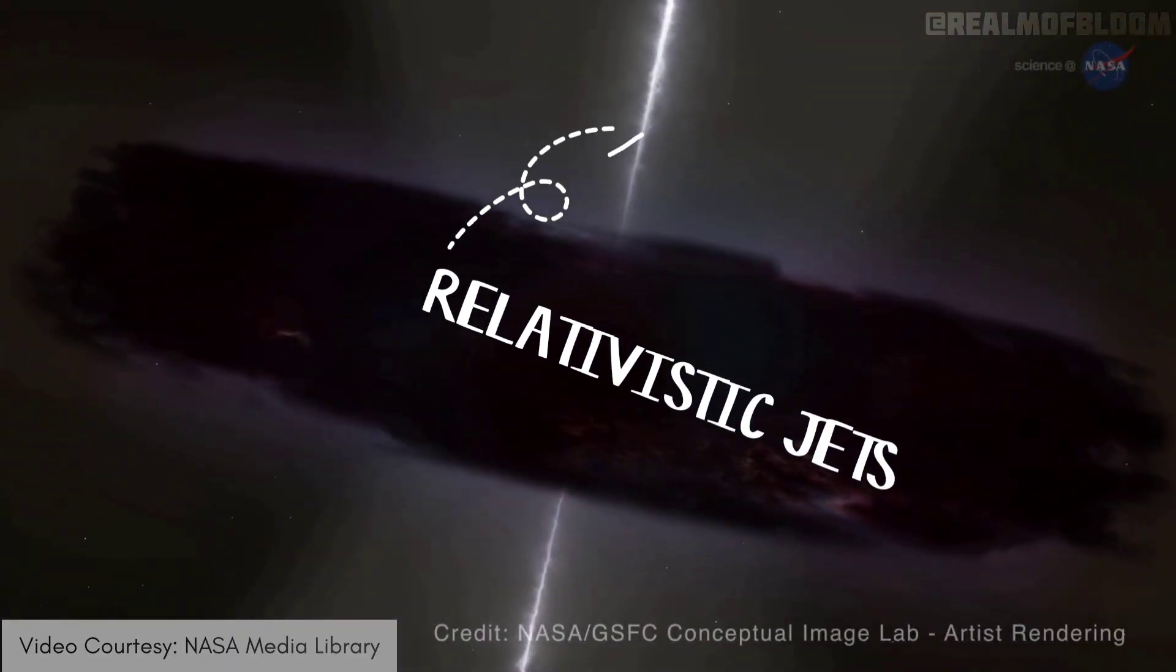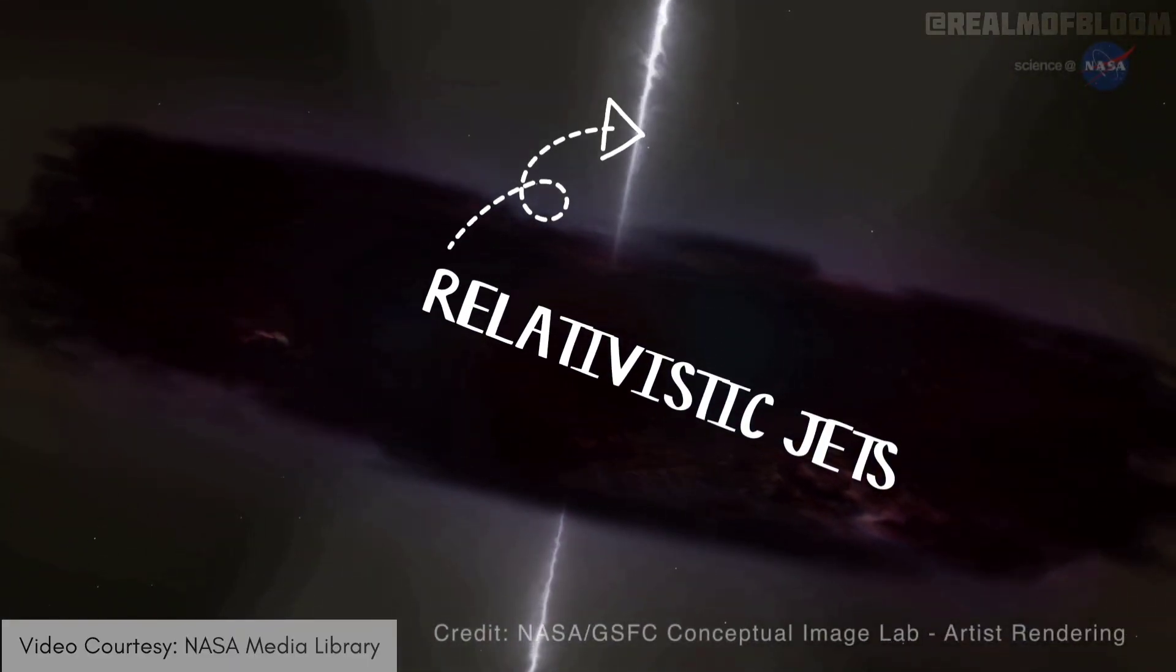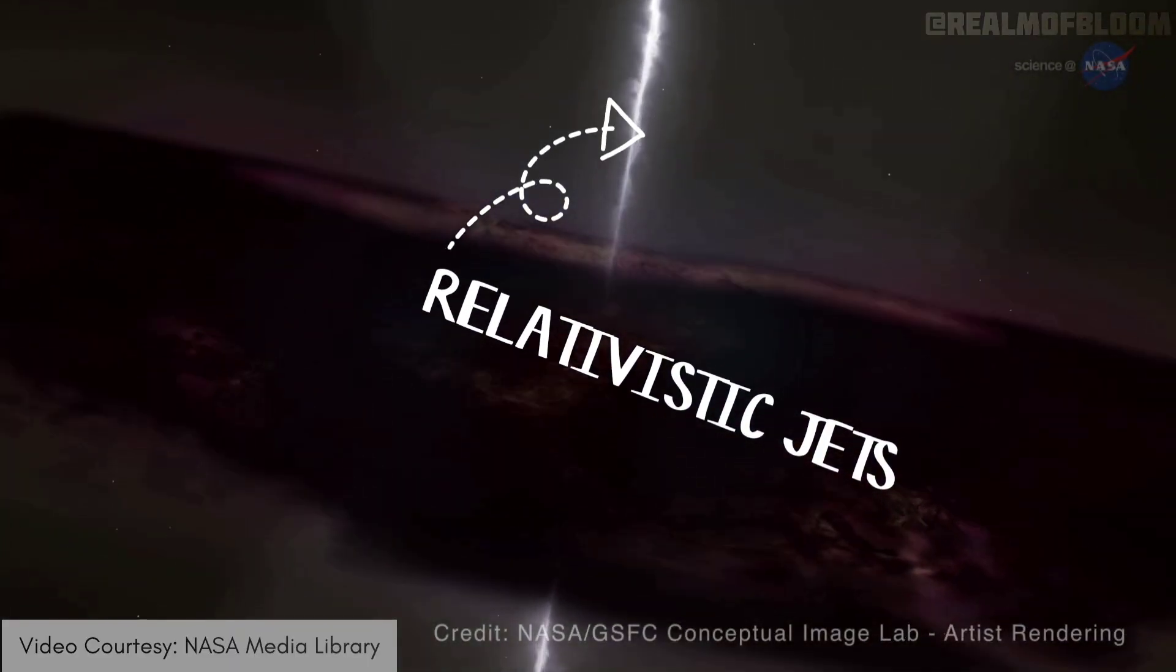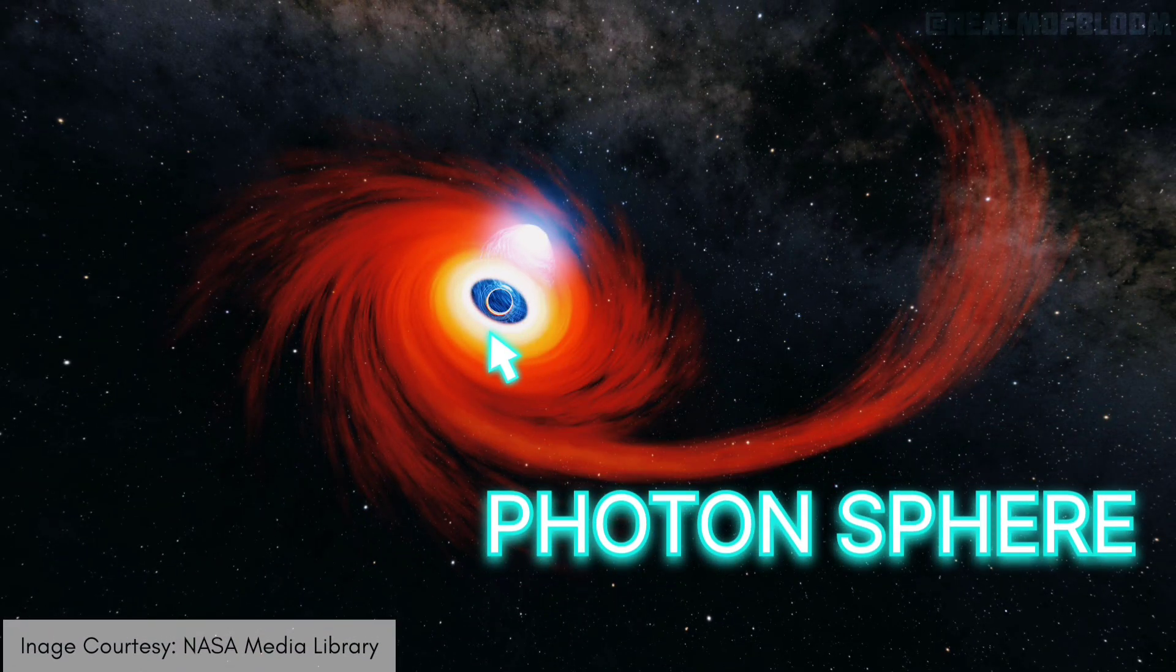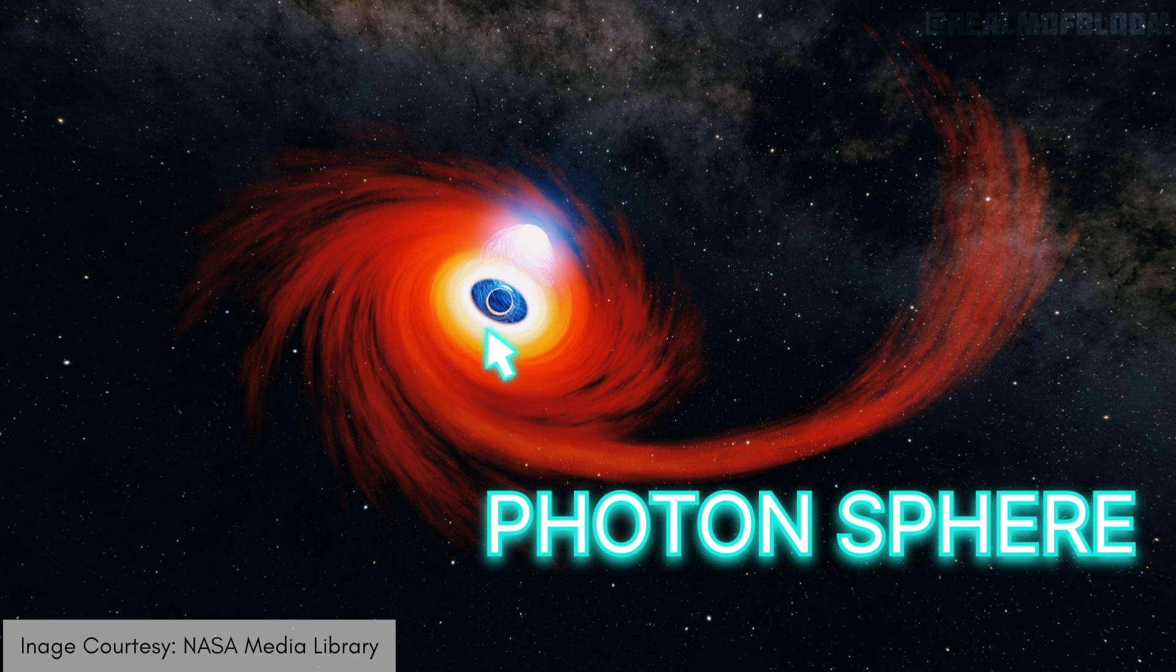Relativistic jets are beams of high-energy particles ejected out from black holes at near light speed. Photon sphere is a region just outside the event horizon, where photons can orbit the black hole, creating a glowing ring.